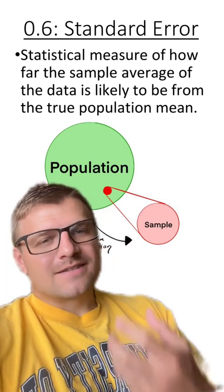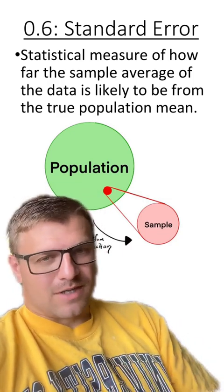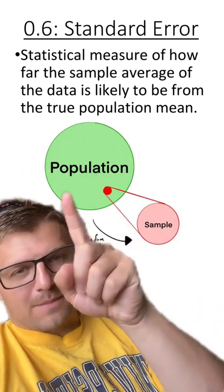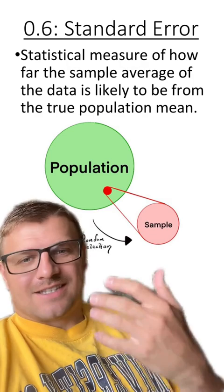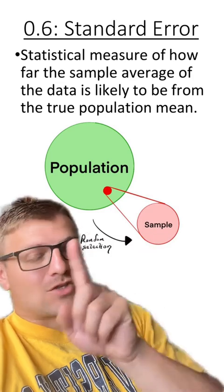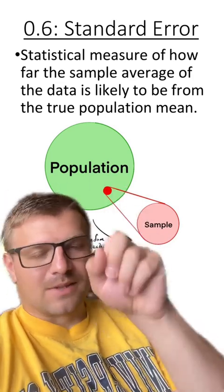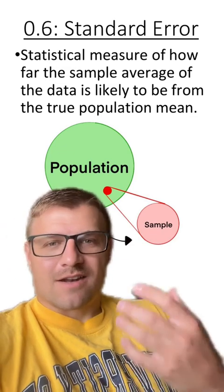This is a measure of how a sample average is going to represent the actual population's mean. So basically, we have this data for the whole population, but we can't logistically take data from the whole population. So we take a sample from just a random sampling, and how does that represent the total population? That is what standard error measures.